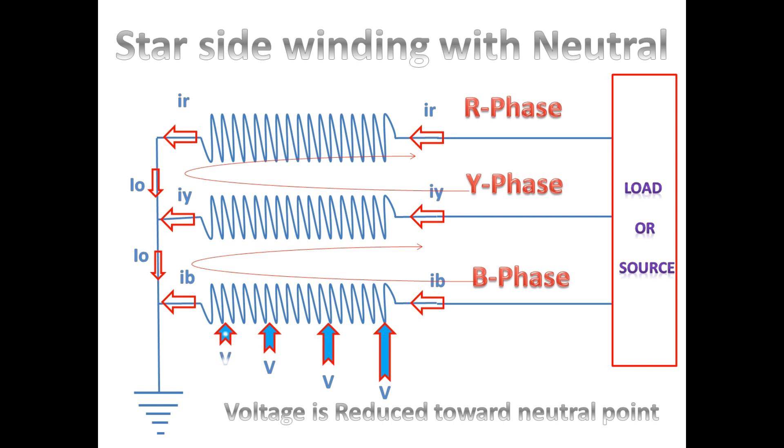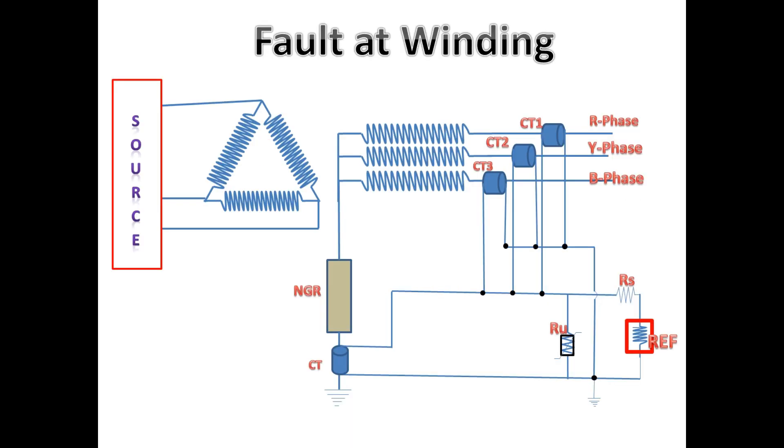Now we go to delta-star transformer with REF setup. Let us consider the fault in the middle of the winding. There, it has sufficient voltage to drive the huge fault current.